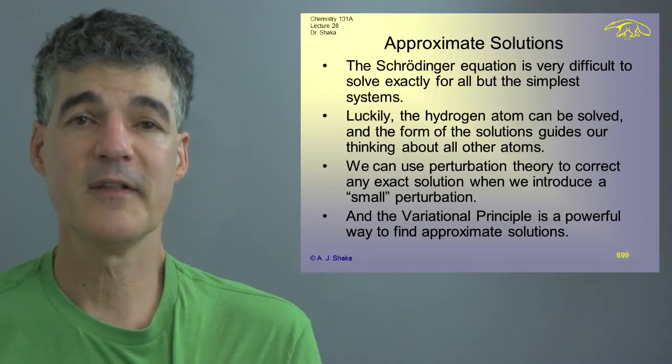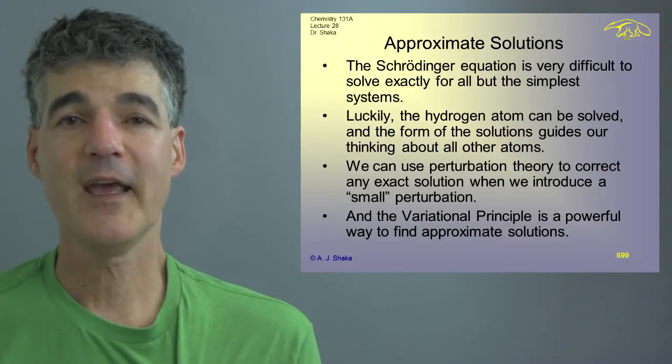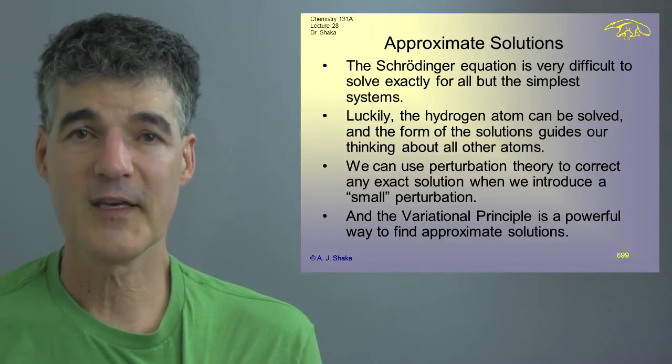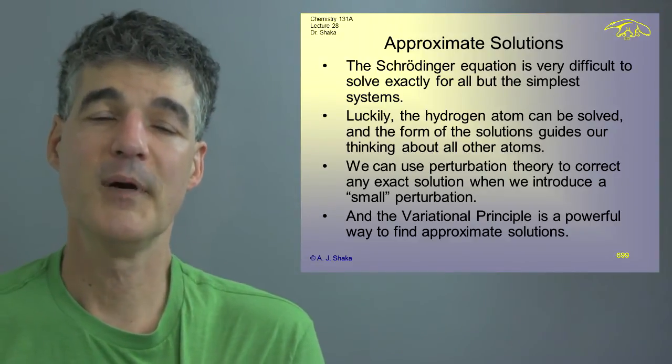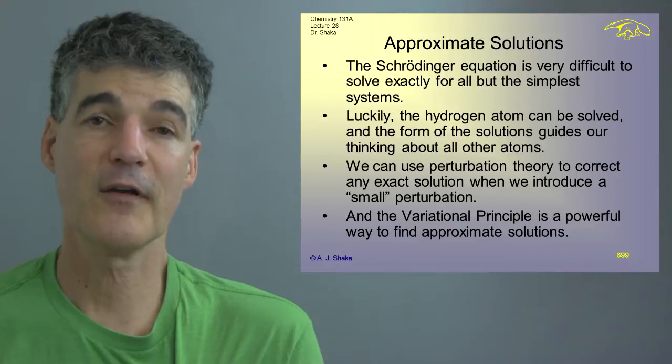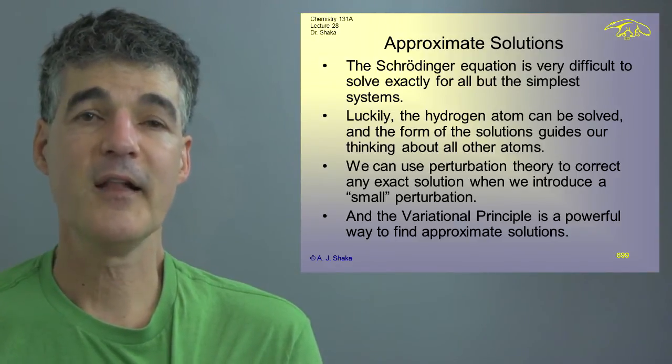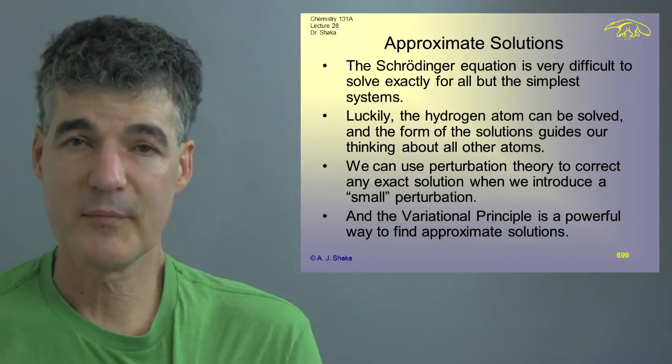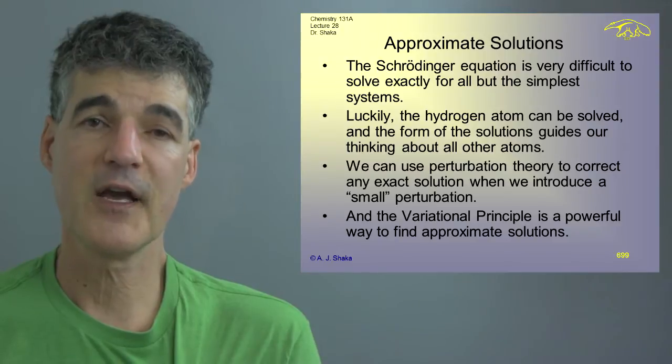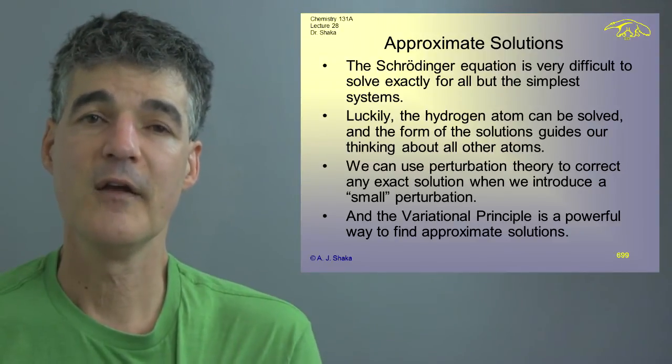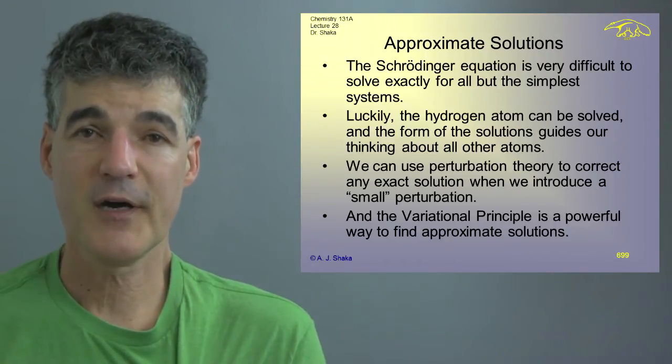But approximate in this game means as close as you like. It's just that we can't write in closed form the exact solution as here's the function but we can write things that are very, very close to many decimal points. And luckily for us, the hydrogen atom can be solved exactly and those solutions for S, P, D, F and so forth and 1, 2, 3, 4. Those solutions guide our intuition about every other atom. When we think about a 2S orbital, we kind of intuitively think, well, it probably looks something like a 2S on hydrogen.